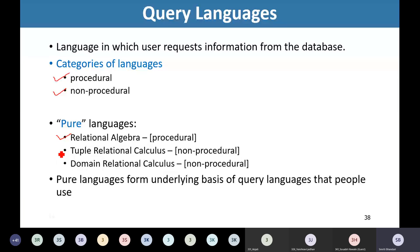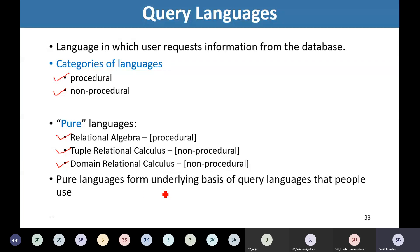These pure languages are of three kinds: relational algebra, tuple-relational calculus, and domain-relational calculus. Relational algebra is the procedural language — we need to mention what to extract and how to extract it. Tuple-relational calculus and domain-relational calculus are non-procedural pure languages; we mention what needs to be extracted but do not provide information on how to do that. In this section, we are going to focus upon all three pure languages, which form the underlying basis for the query languages we use.